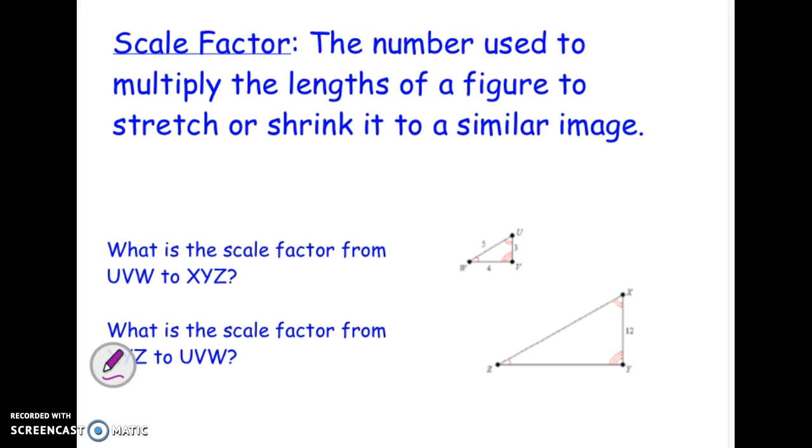If you notice, these two triangles below are similar. UVW and XYZ are similar. They have all the same angles, and their sides are in proportion to each other, even though we only see one pair of sides that we can actually tell that for sure.